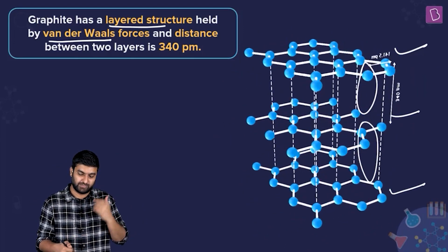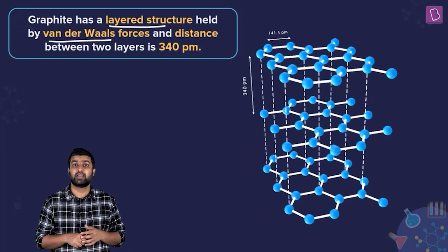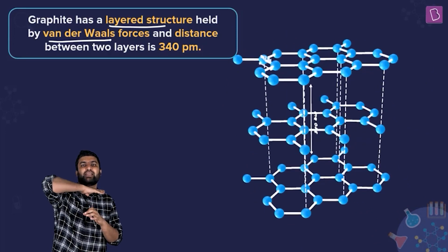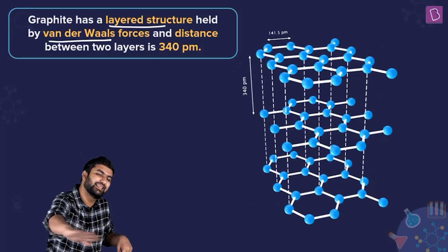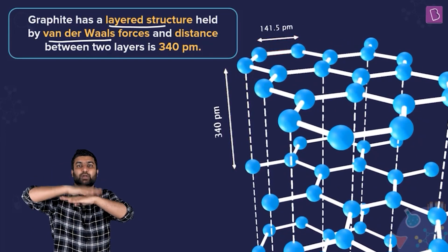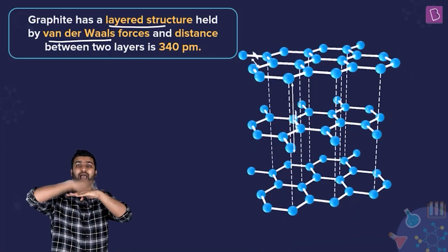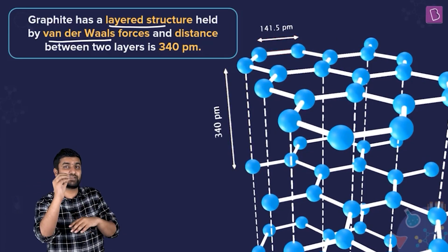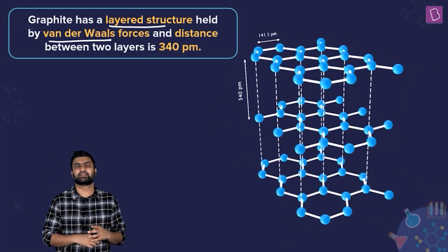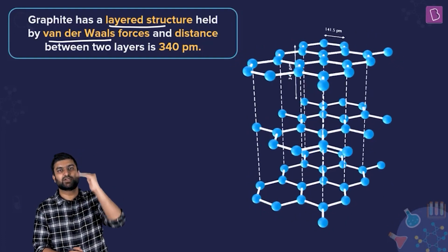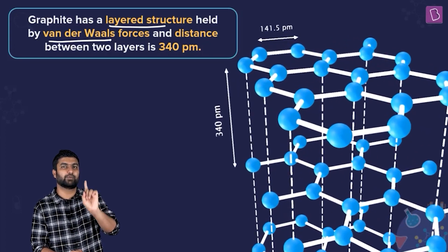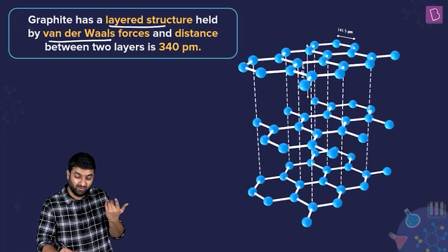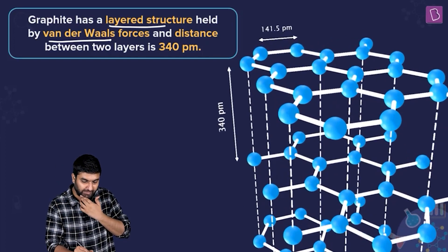The covalent bonding in graphite exists only within a layer. Between two layers, there is no covalent bond — no actual sharing of electrons, no actual orbital overlap. It is just weak electrostatic forces, which we also call van der Waals forces. Within a layer, you have a hexagonal 3D structure.